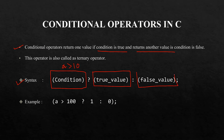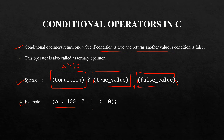For the conditional operator we put a question mark, and if the condition is true it returns the true value, otherwise the false value is returned. For example, if the value of a is greater than 100 then it returns 1, otherwise it returns 0. This operator is also called the ternary operator because it operates on three operands. Now we will convert our target program using the conditional operator.